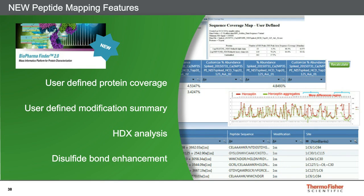We will soon launch BioPharmaFinder 2.0, and I want to give you a preview of new implemented features. For peptide mapping experiments, it's now possible to select which peptides should be used for the calculation and display of the sequence coverage. The peptides and modifications used for quantification and the modification summary can now also be defined and changed. We've integrated features for HDX experiments, for example the deuterium uptake plot. For disulfide bond assignments, we now have a column where the involved cysteines of the bonds are displayed, and with the filtering function it's very easy to display all identified disulfide bonds.